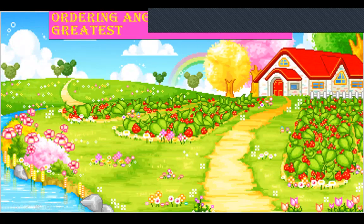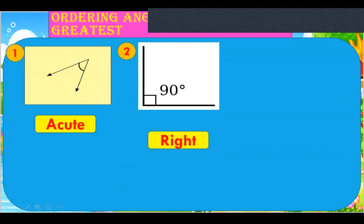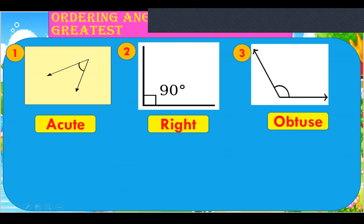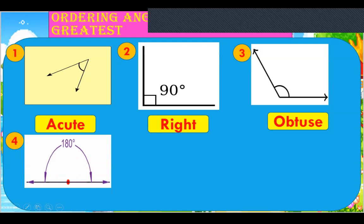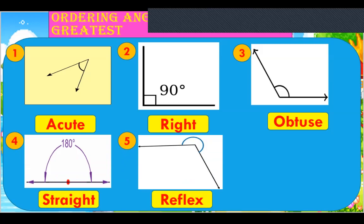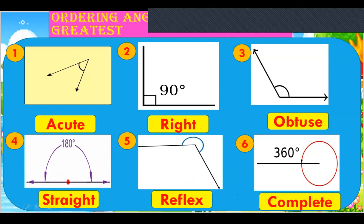Now ordering angles from least to greatest. Children, always remember the smallest angle is an acute angle, then comes the right angle, then an obtuse angle, after that a straight angle which is 180 degrees, then a reflex angle, and lastly a complete angle measuring 360 degrees. I want you all to remember this sequence carefully.